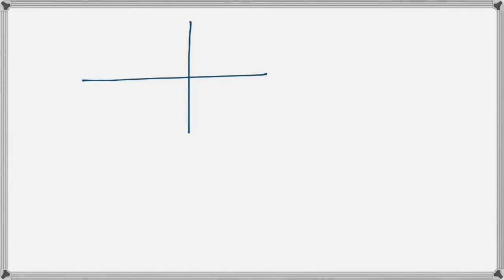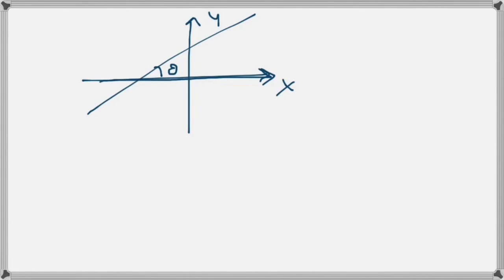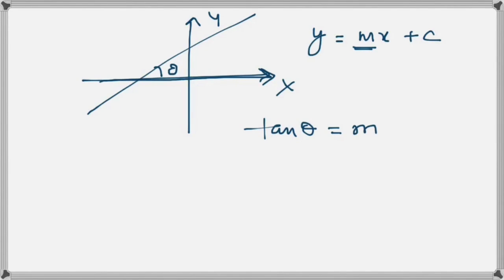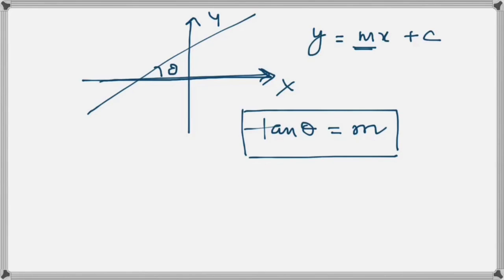One more important point: a straight line makes an angle θ with the positive direction of the x-axis. The value m in y = mx + c is not just any number — it gives us the tangent of this angle θ. So we can write tan θ = m. This is a very useful relationship that comes in handy in many problems. That's it for straight lines; in the next video we will look at circles, ellipses, parabolas, and hyperbolas.